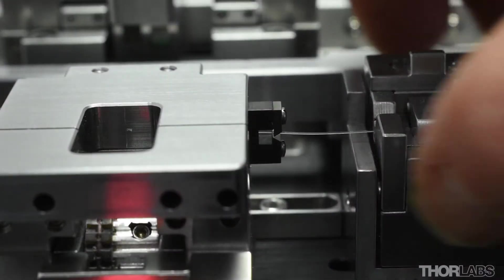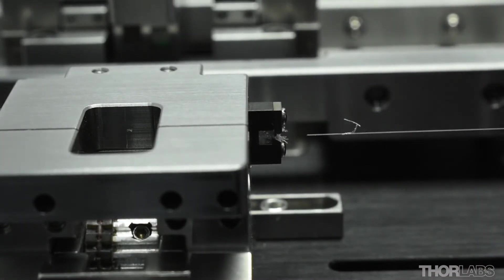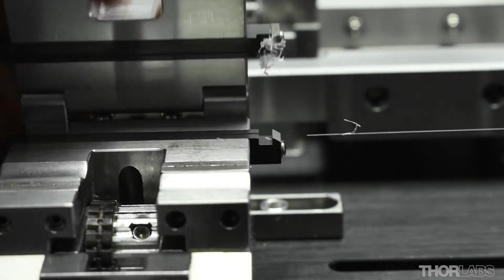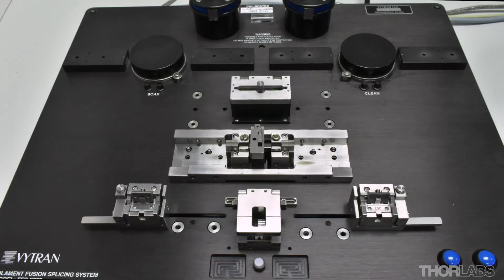This video will demonstrate how to clean stripped fibres using an FFS2000. It will also explain how to remove the coating debris generated at the stripping station. If you have not yet watched the video about stripping fibres using an FFS2000, click on the annotation or see the description below for a link to view this first.